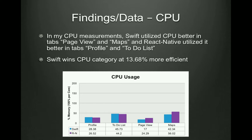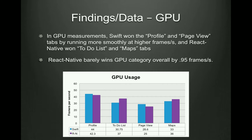Findings data for CPU. In my CPU measurements, Swift utilized CPU better in the page view and maps tabs, and React Native utilized it better in the profile and to-do list tabs. Swift wins the CPU category at 13.68% more efficient. For the GPU measurements, Swift won the profile and page view tabs by running more smoothly at higher frames per second, and React Native won the to-do list and maps tabs. React Native barely wins the GPU category overall by 0.95 frames per second.